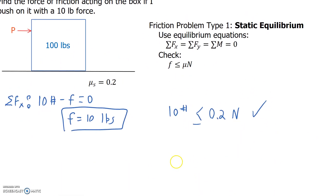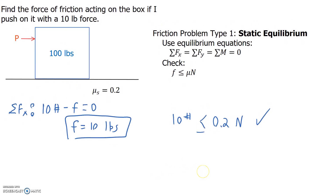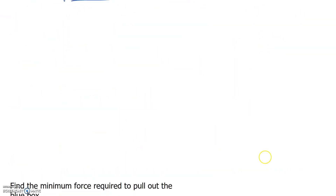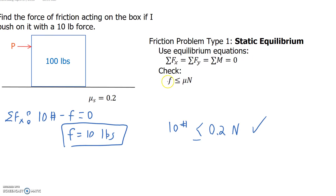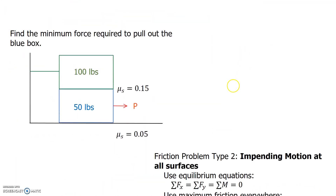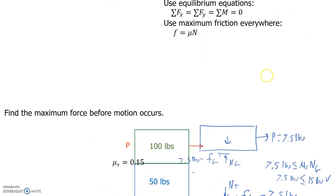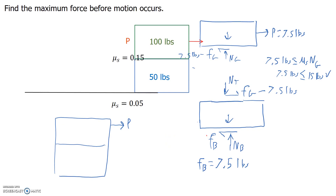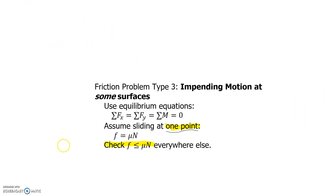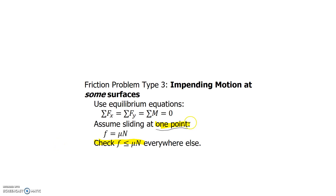In summary, we'll see three types of friction problems. The first is static equilibrium: use the equilibrium equations and check that friction is less than or equal to mu times N, but don't use the friction equation directly. The second is impending motion at all surfaces: use the equilibrium equations in combination with the friction equation, friction equals mu times N. The third is impending motion at some surfaces: assume where sliding occurs, then check that friction is less than mu times N everywhere else. If it's greater than mu times N, rework the problem and change the assumption.